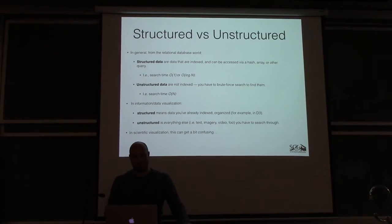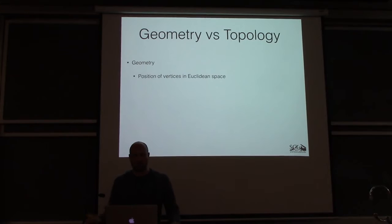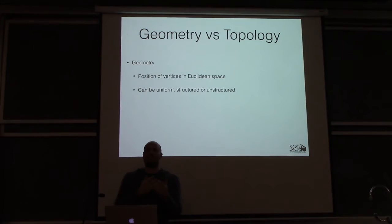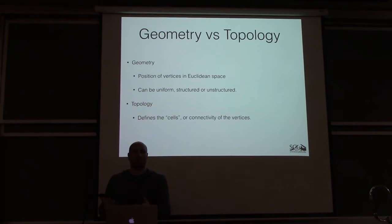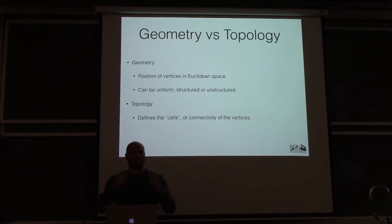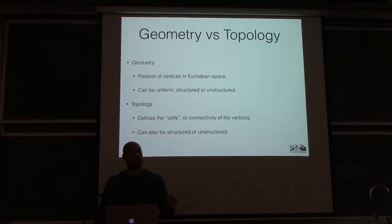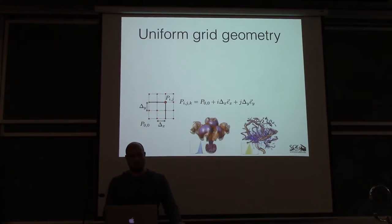In scientific visualization there are two separate concepts: geometry and topology. Geometry is really the position of vertices in Euclidean space — these positions can be uniform, structured, or unstructured. Topology is the connectivity — how the vertices are connected together. Most of the time in spatial visualization, when people talk about structured or unstructured, they're really talking about the geometry.